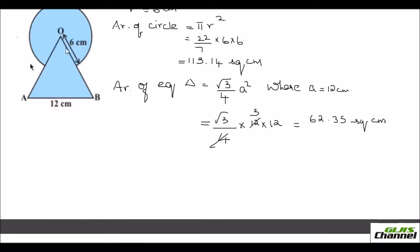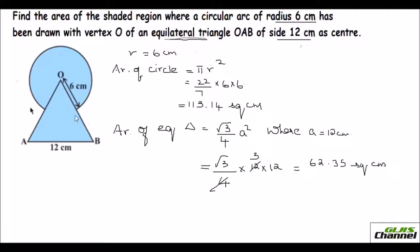If I add the area of the circle and the equilateral triangle, the sector at vertex O would be counted twice — once with the circle and once with the triangle. So we need to subtract the sector area once so that it is not added twice.